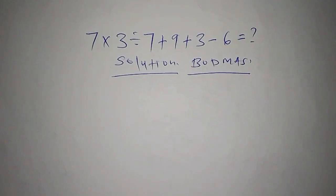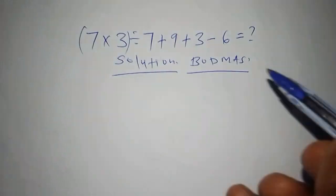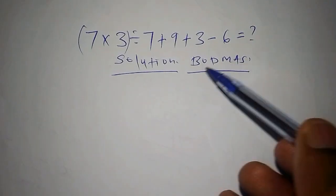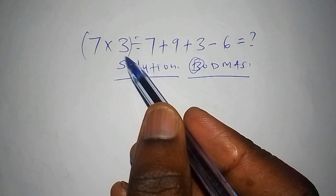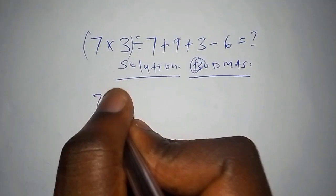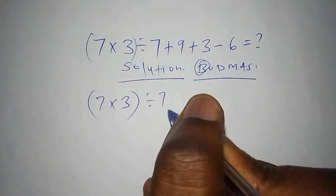So here, the bracket is supposed to be this. So under this we have the bracket, and the brackets meaning that we have this. So allow us to write it: 7 multiply by 3 into bracket divide by 7 add to 9 add to 3 subtract from 6.